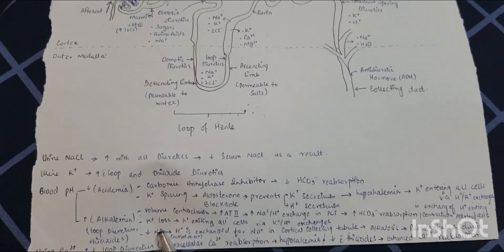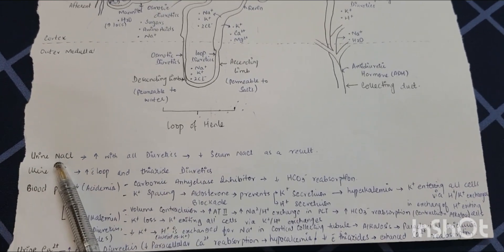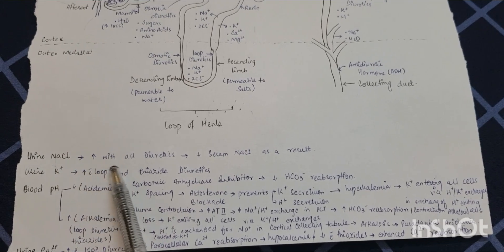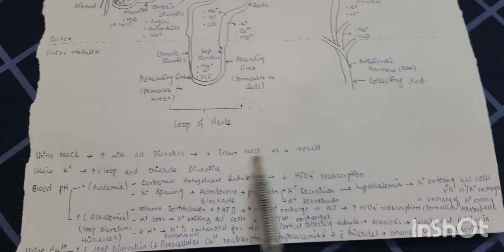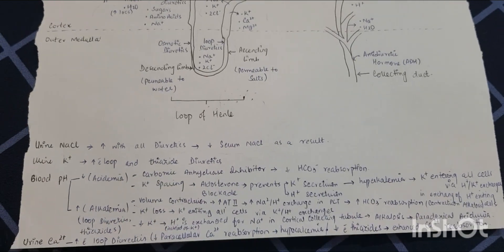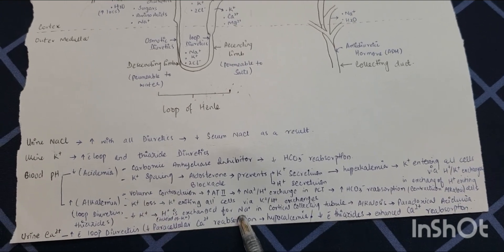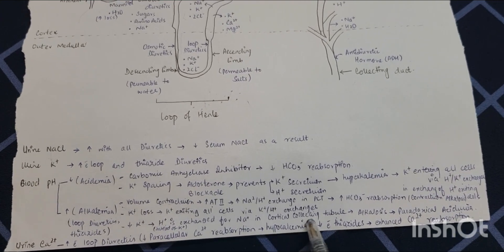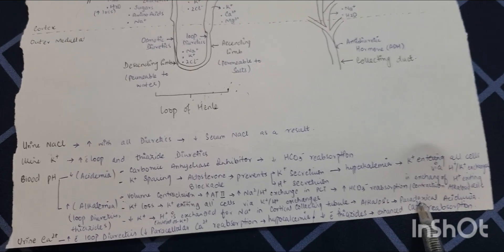Now, coming towards the action of diuretics on electrolyte concentration and urine pH — I've written a summary and will add these notes as a PDF in the description. Urinary sodium and chloride increase with all diuretics, decreasing serum sodium and chloride. Urinary potassium increases with loop and thiazide diuretics. Urinary calcium increases with loop diuretics, decreasing paracellular calcium reabsorption and resulting in hypocalcemia. Calcium decreases with thiazides, which enhance calcium reabsorption.